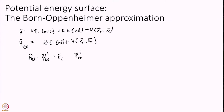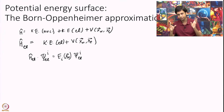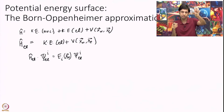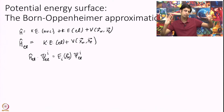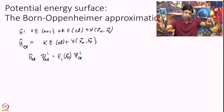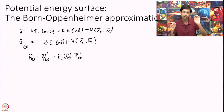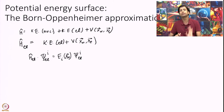I solve this equation for a fixed value of nuclear positions - this is a tricky concept. What I do is fix all the nuclear positions. For an HF molecule, I clamp the hydrogen nuclei and clamp the fluorine nuclei, fixing them. I only look at the kinetic energy of electrons - electrons are mobile and have kinetic energy - and the net potential the electrons feel with respect to these clamped nuclei. I solve H psi equal to E psi for this Hamiltonian. This can actually be solved using a computer.